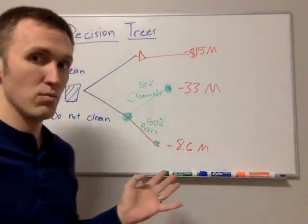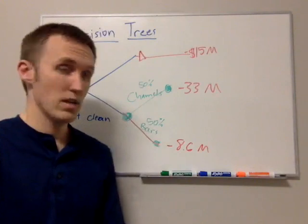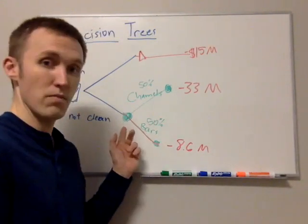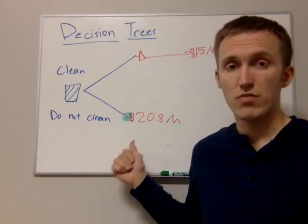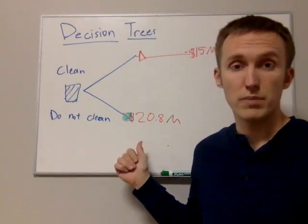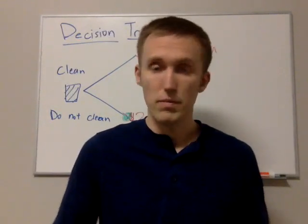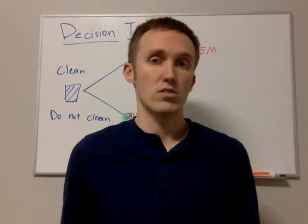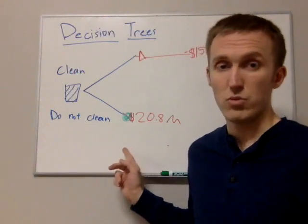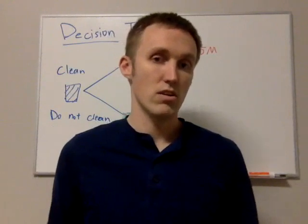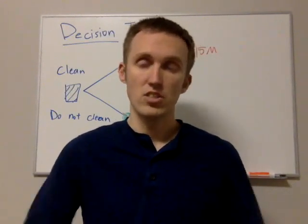At this point, you might decide to figure out whether you have sand channels or bars before making any decision, if that can be done cheaply. Doing the final backup step, we calculate the expected payout for the Do Not Clean Up node: $20.8 million. Under these conditions, with those probabilities and an expected lawsuit cost of $50 million, we would definitely want to clean up. The expected payout from cleaning up is only $15 million, while not cleaning up costs more than $20 million on average — meaning the chances are good we'd pay more than if we had just cleaned up.